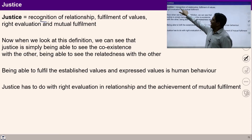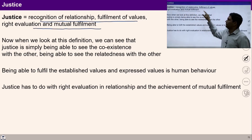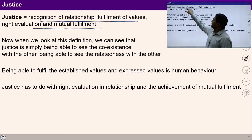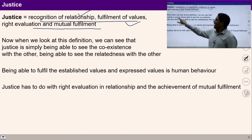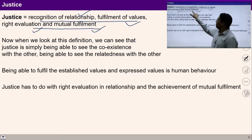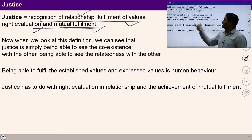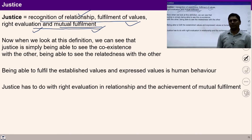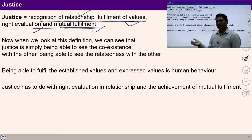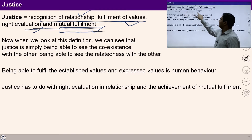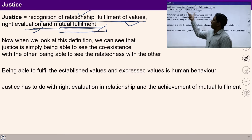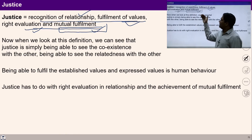As defined in UHV 2 and UHV 3, justice means recognition of relationship, fulfillment of values, and right evaluation which leads to mutual fulfillment — this mutual fulfillment is justice. To ensure justice and mutual fulfillment, four things are required: I am able to recognize relationships, I am able to fulfill established and expressed values, and I am able to evaluate feelings rightly. If I ensure these components from my side, it means I have ensured justice from my side.